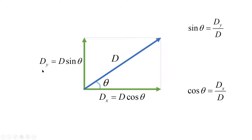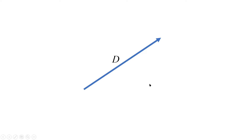DX is equal to D cosine theta and DY equals D sine theta. So when you have angle theta, the component adjacent to the angle theta uses cosine theta, and the component with no angle uses sine theta. Now let's come to the second situation with vector D.